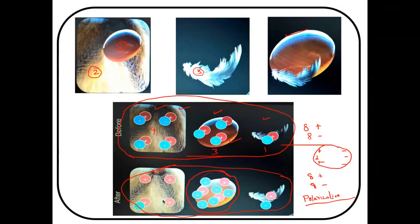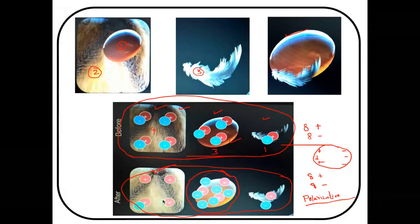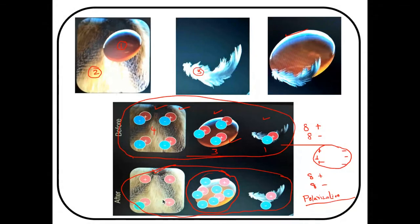This is the same as the balloon concept from last week: rub a balloon on your hair, bring it near the wall, and it sticks — same polarization principle. When you take the crystal and rub it, it becomes positively charged, and when you move it near the feather, polarization and charge division takes place, attracting the feather.